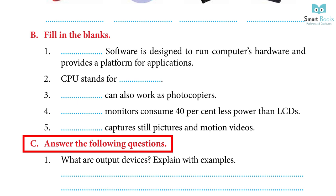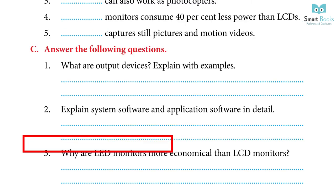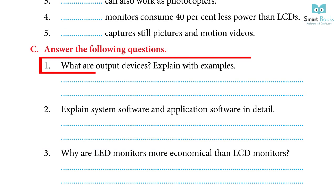C. Answer the following questions. 1. What are output devices? Explain with examples. Answer: The devices which are used to display, print and show the results after processing are called output devices. Monitors, printer, speaker and projector are output devices.